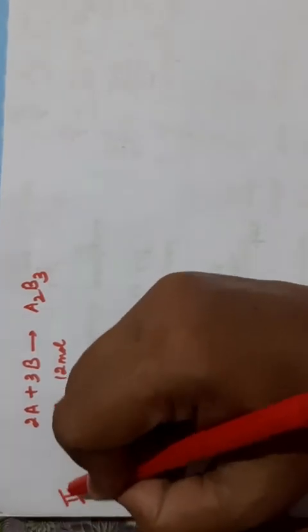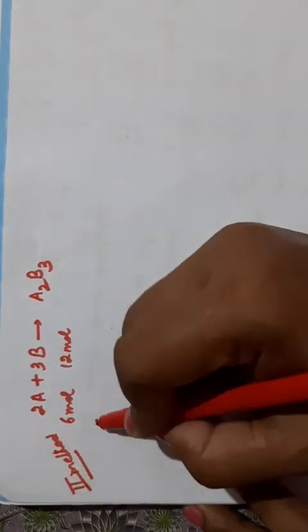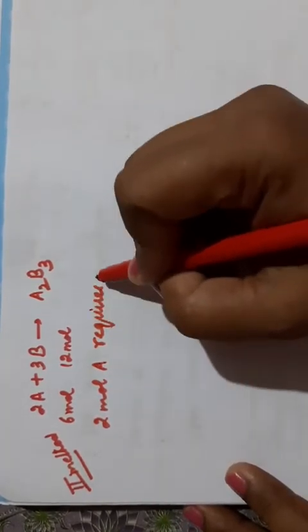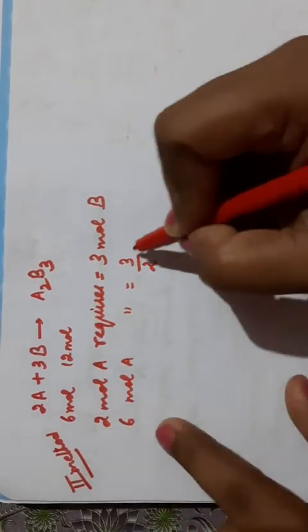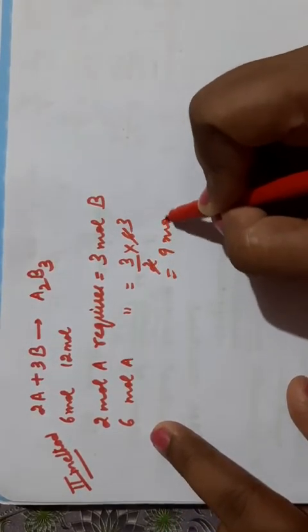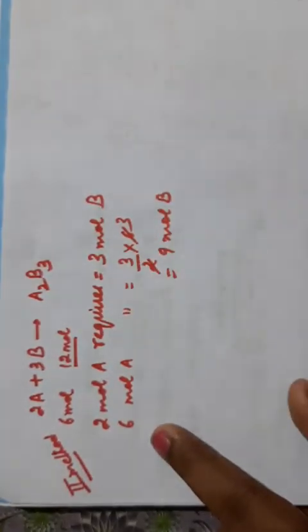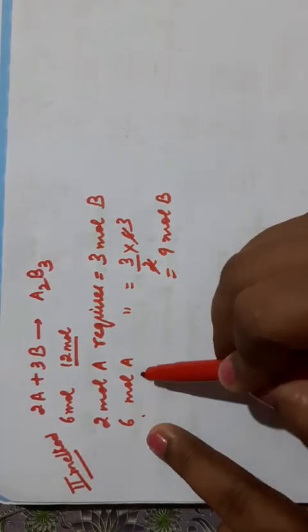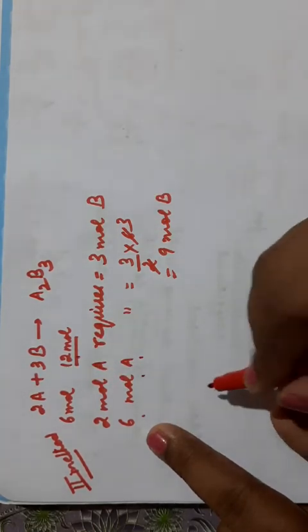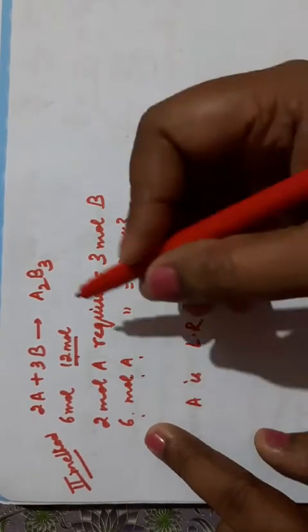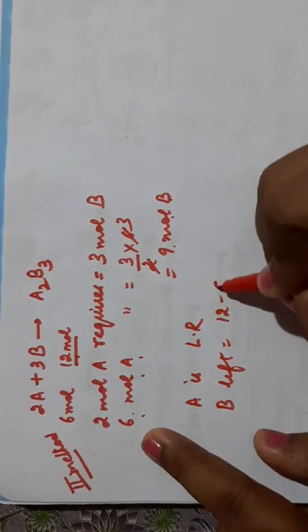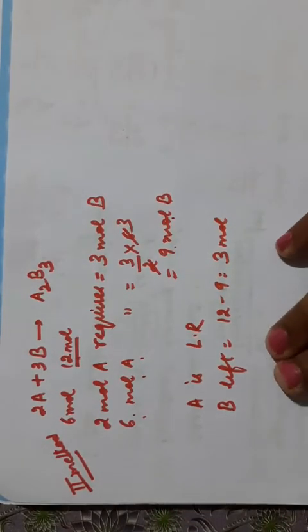The second method is known as the unitary method. According to the balanced equation, 2 moles of A requires 3 moles of B for complete reaction. So 6 moles of A will require (3/2) × 6 = 9 moles of B. But the moles available are 12. You need only 9 moles of B for complete reaction of 6 moles of A, but 12 moles are available. That means A is the limiting reagent. B left behind will be 12 minus 9, that is 3 moles.